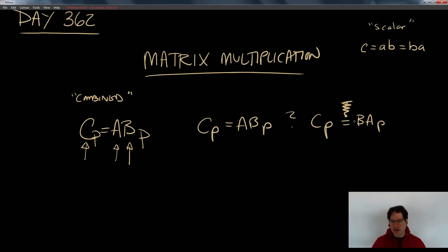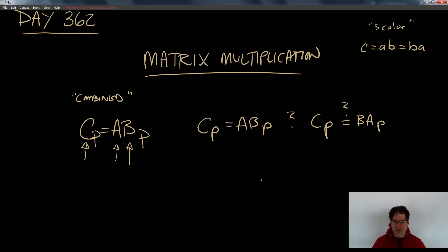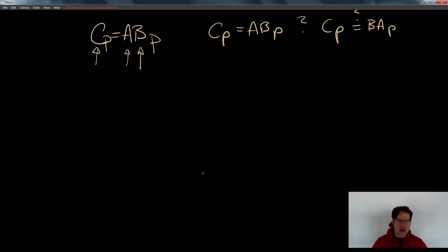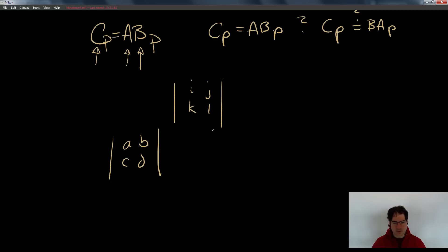Matrix multiplication is order dependent. Because of that, when we do matrix multiplication we must be mindful of the order — only through extreme happenstance, when matrices happen to have very specific structure, will we get the same results from AB and BA. One example where order doesn't matter is if a matrix is diagonal. If there are just zeros on the off-diagonals, what we get is very akin to scalar multiplication, because the diagonals always line up in the same place no matter which way you multiply.